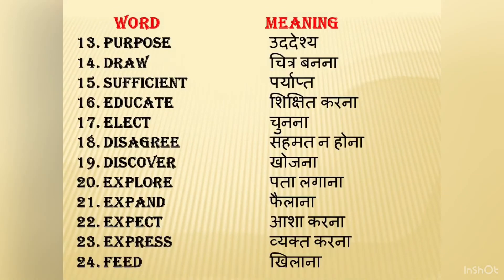Purpose means uddeshya — goal or aim. What is your purpose of doing this work? Draw means chitra banana — to make a picture. Can you draw this picture? Sufficient means paryapt — enough. This is sufficient for me. I need no more. Kabhi kabhi aap kehte hain yeh cheez mere liye paryapt hai — this is sufficient for me, I need no more.